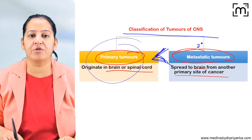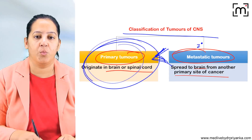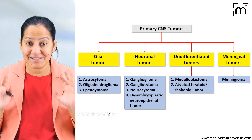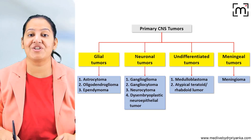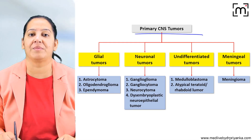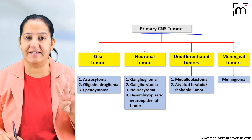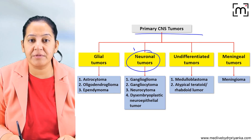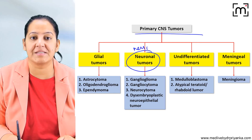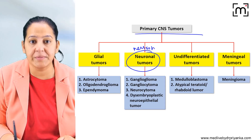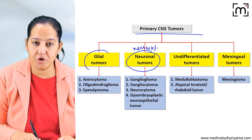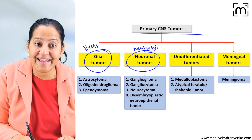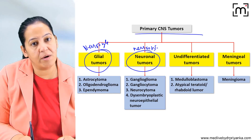Currently I am teaching you the primary brain tumours. What are the primary brain tumours? This is the final classification: we divide primary brain tumours into four categories. The first category is neuronal tumours — brain tumours which arise from the neurons. The second category is tumours which arise from the neuroglia, known as glial tumours.